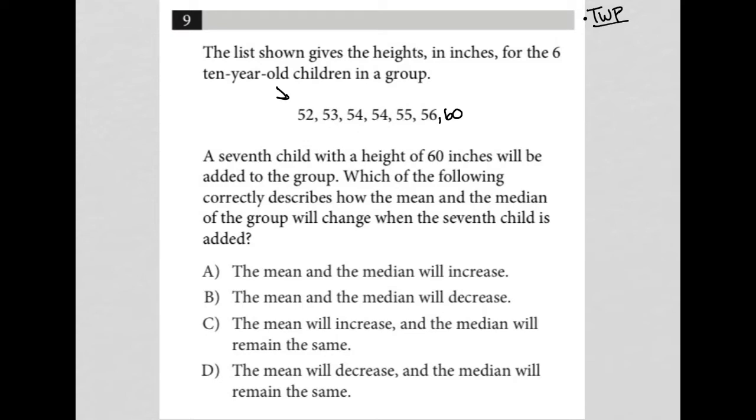Which of the following correctly describes how the mean and the median of the group will change when the seventh child is added? Well, let's figure out what is the mean of the group before the seventh child is added. So the mean of the six, and I'll just put parentheses six.